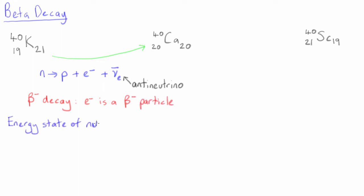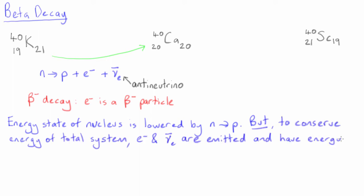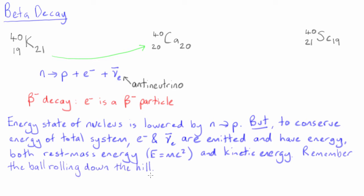The electron and anti-neutrino have mass, hence they have energy using E equals MC squared, and they also carry kinetic energy. In this way the total energy is conserved, despite the mass energy of calcium-40 being less than the mass energy of potassium-40.